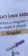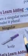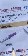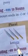Now let's see an example. This is the singular form: knife. You can see this is a knife and its ending letter is FE. So we will change it into VES to make it the plural form.